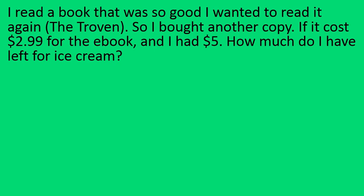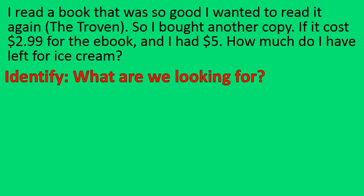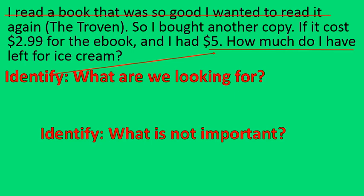Alright, so we're going to go through the steps. Identify first — what are we looking for? The answer is: how much do I have? We don't really need to know that I'm buying it for ice cream, so let's get rid of the unimportant information. That I bought a book, I thought it was good — all that silliness up top. Even the ice cream part could be crossed out, because it's not super important.